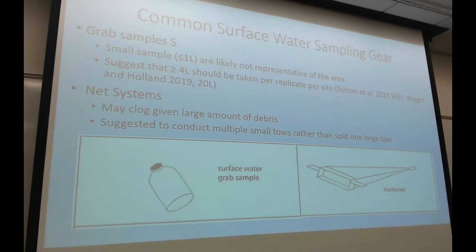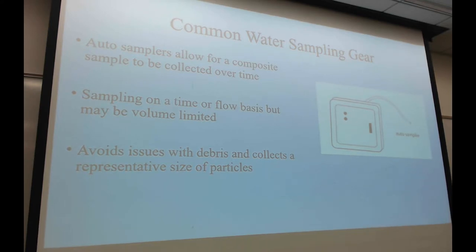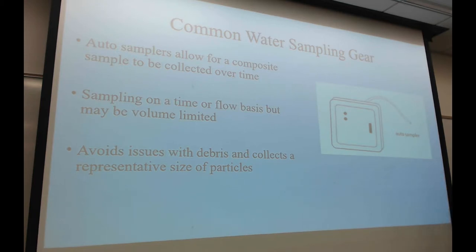Grab samples capture one period of time. You can get a lot more information with an auto sampler, where you're pulling in a set amount of water at a particular time point or flow rate — giving you a composite sample. Most of us do grab samples, but the auto sampler gives you the idea that you could go across 24 hours, for example. You're still limited to volume, but you take out a lot of the issue with debris.